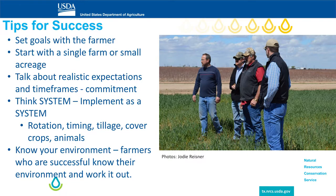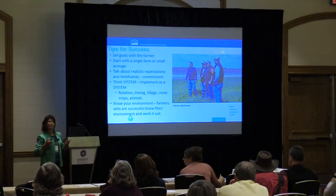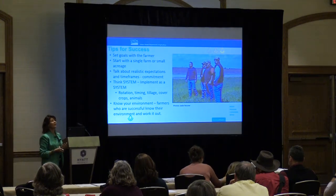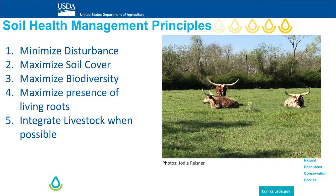For tips for success in this area: once again, it's working one-on-one with the farmer, asking them what their objectives are, figuring out realistic expectations, and talking about long-term goals. Think systems — it needs to be rotation, timing, and cover crops together; help them put together a system for their own farm. One of the greatest tips is knowing your environment. When you talk with the farmer about knowing their environment and get them to think through it, they will come up with a plan. It all comes back to these soil health principles, which I've seen work throughout the whole central region of our country. As they implement these principles on their own farm, they will have success.